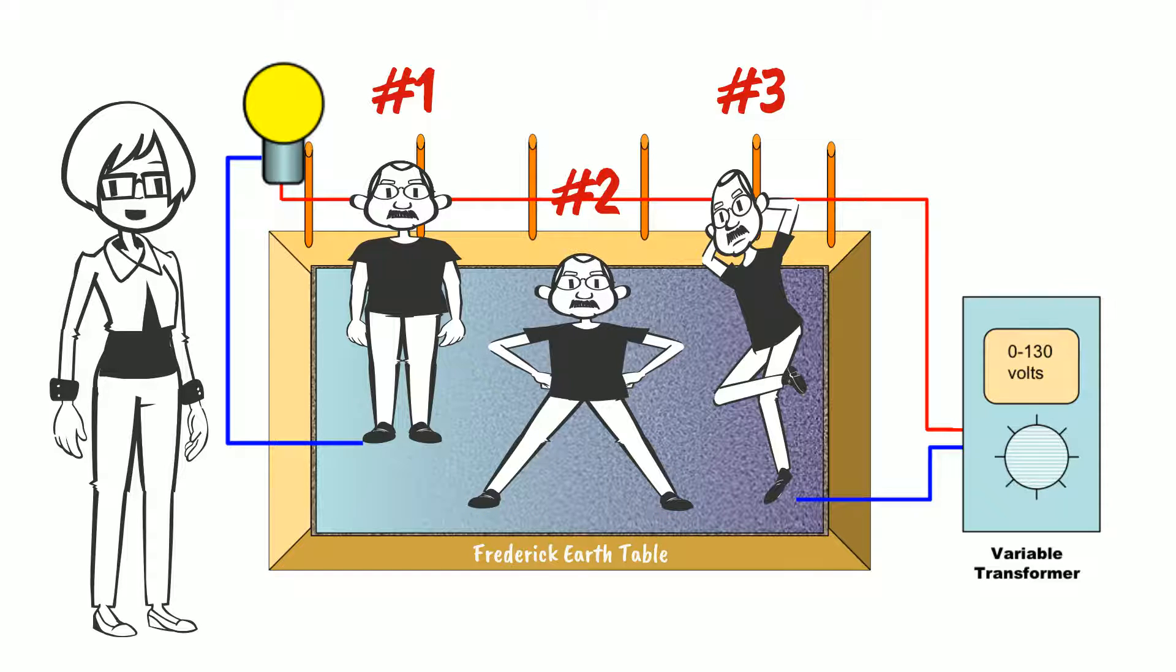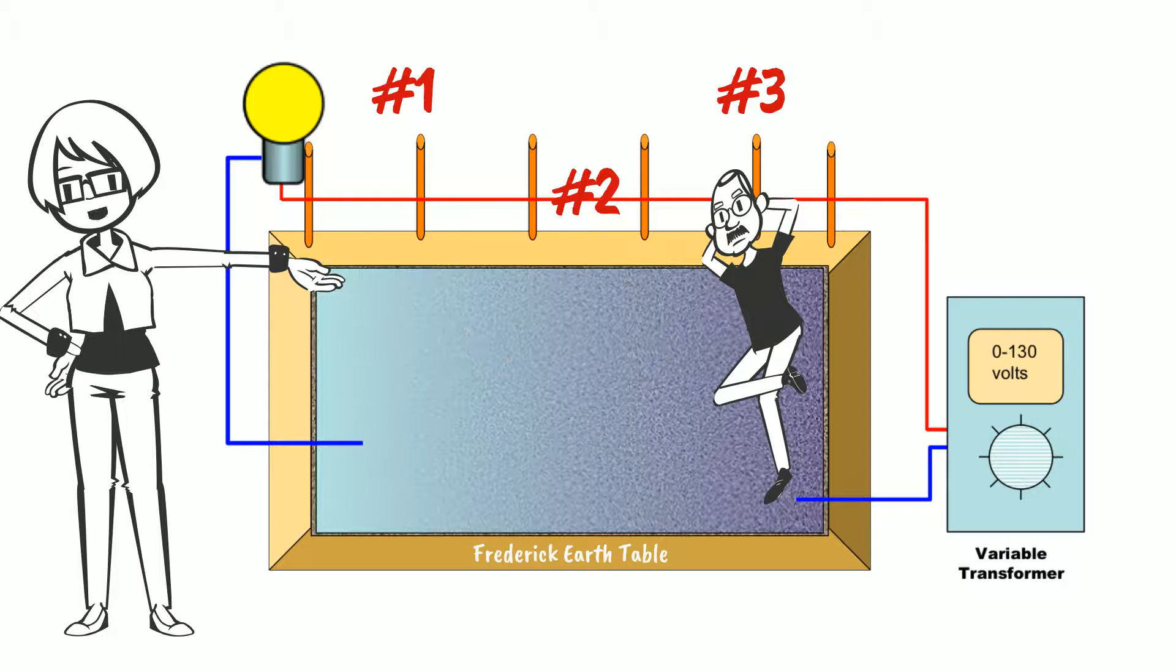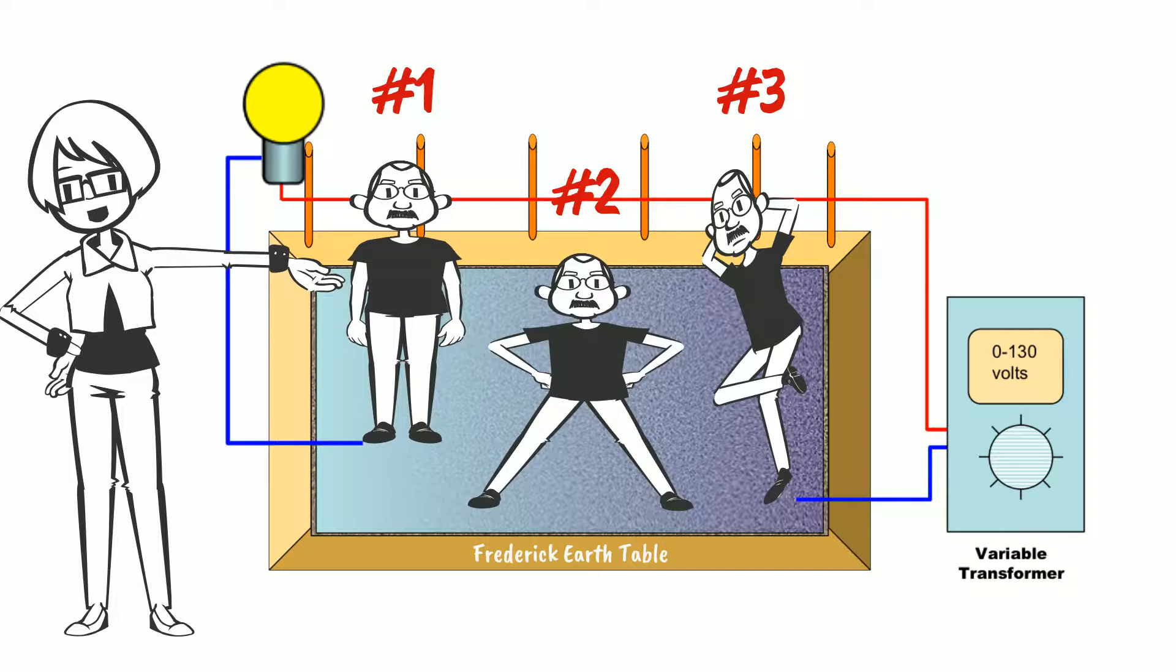Now, which Ralph has the least amount of current flowing through his body? If you answered number three, you are correct. Standing on one foot or keeping your feet close together reduces current flowing through your body. In this case, Ralph number three is an open circuit, since only one foot is in touch with the ground. Electrons from the ground are not flowing through his body. By lifting one foot, you can break the circuit.